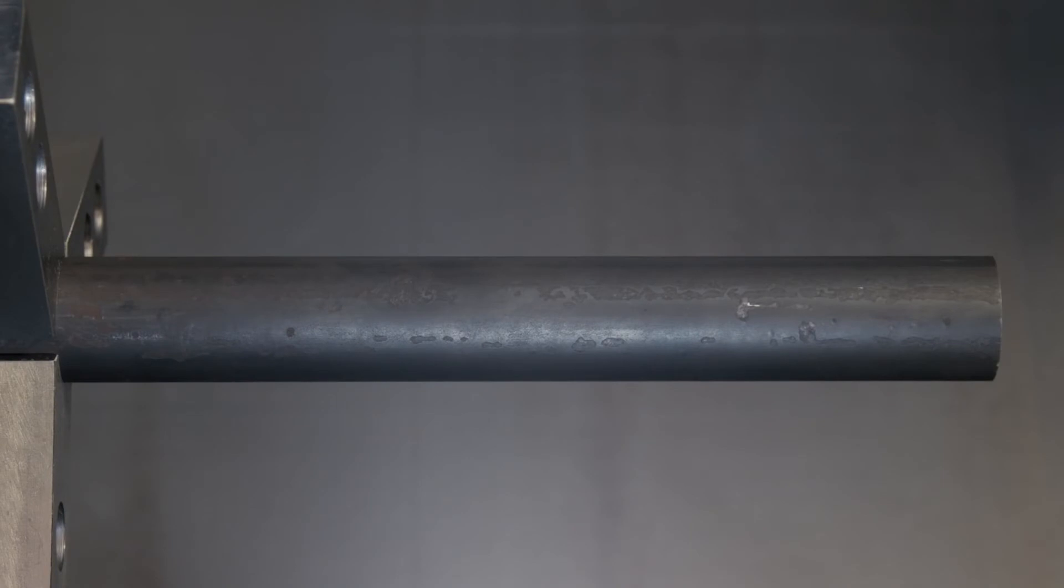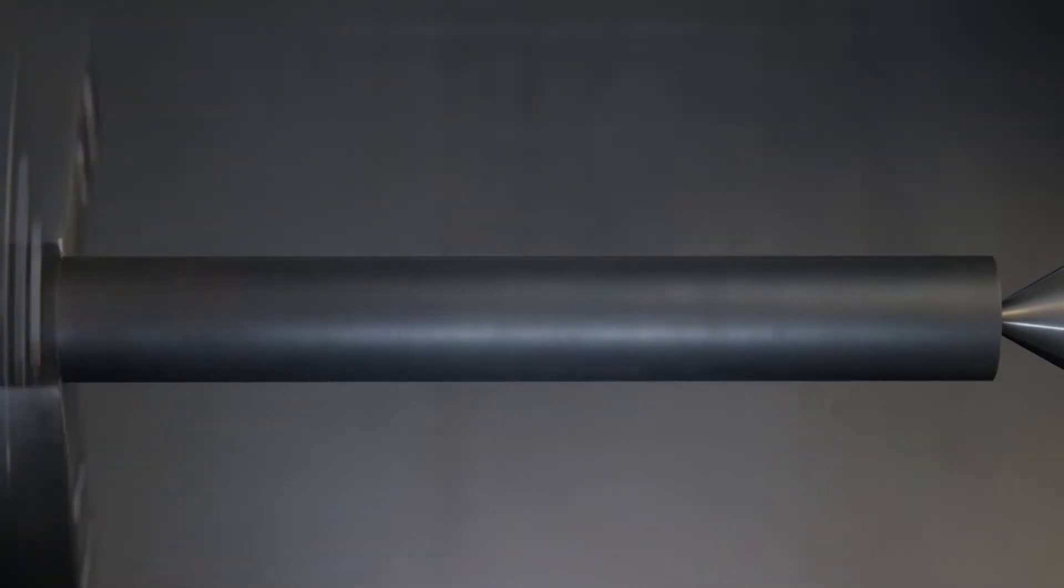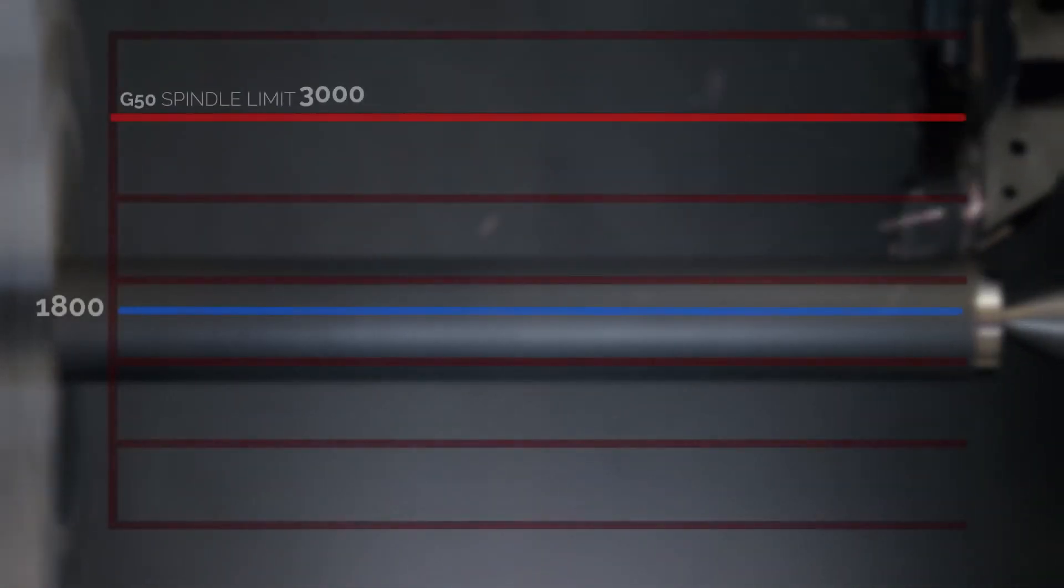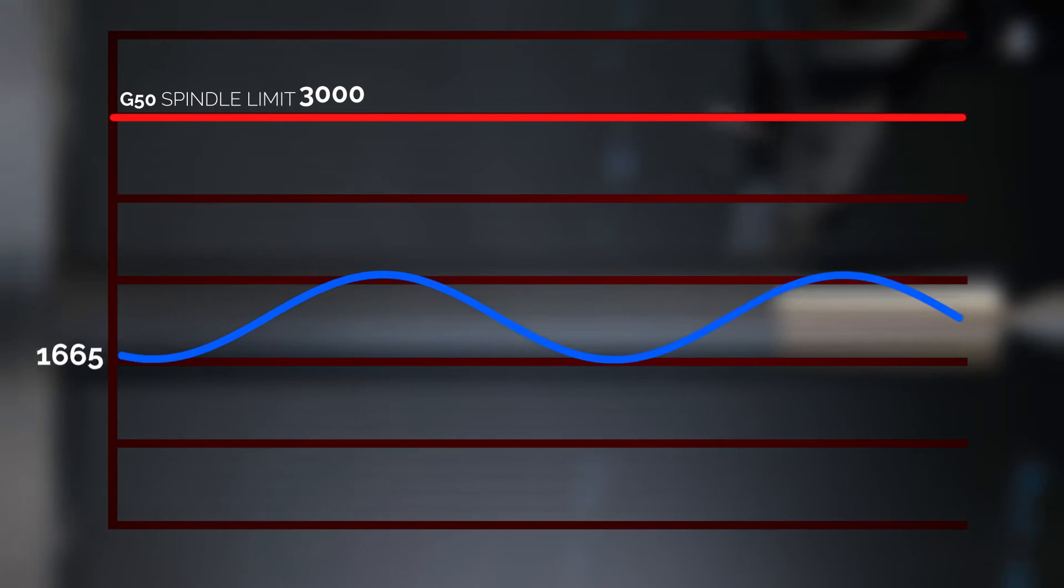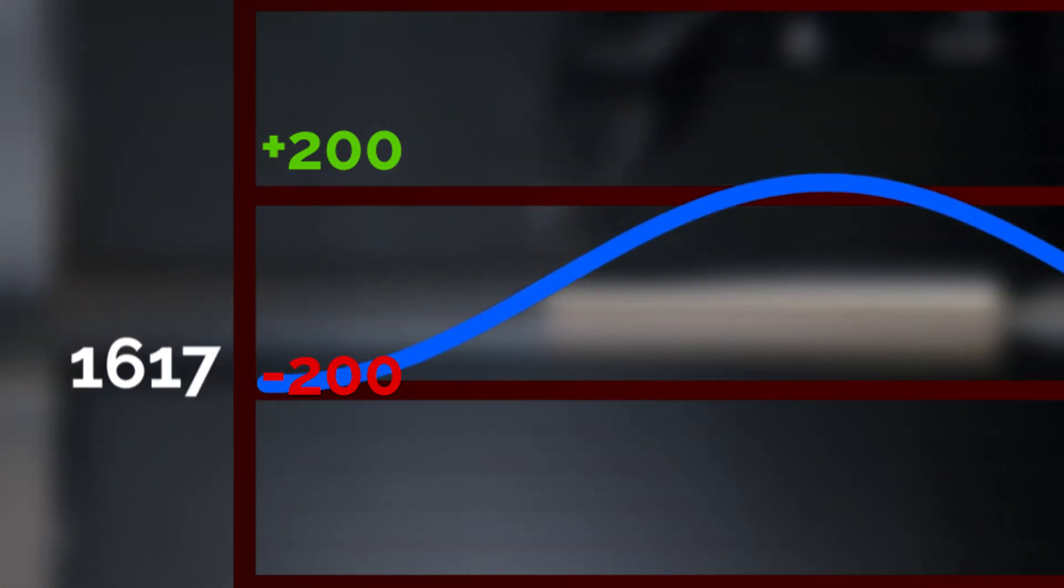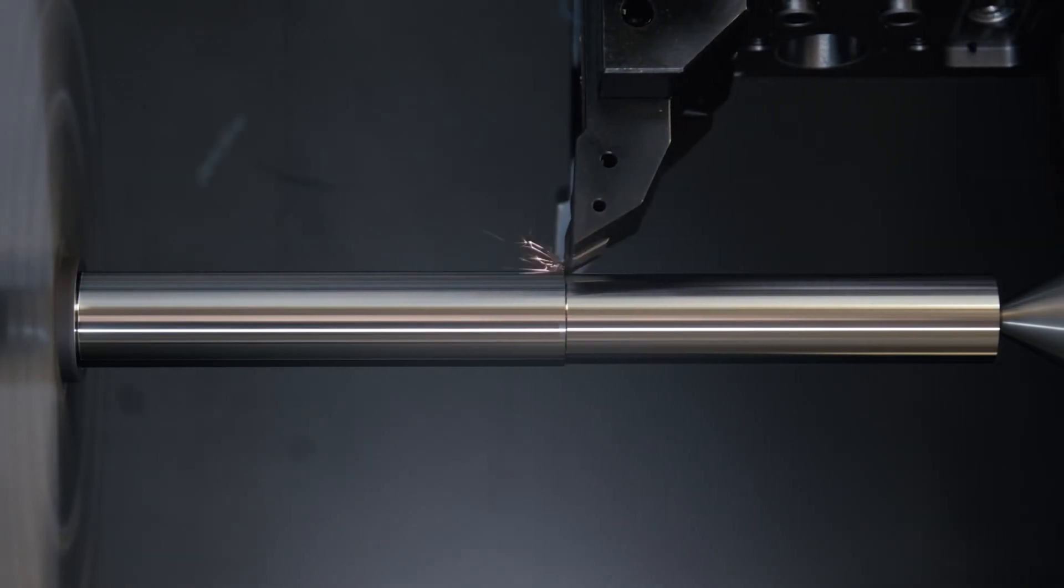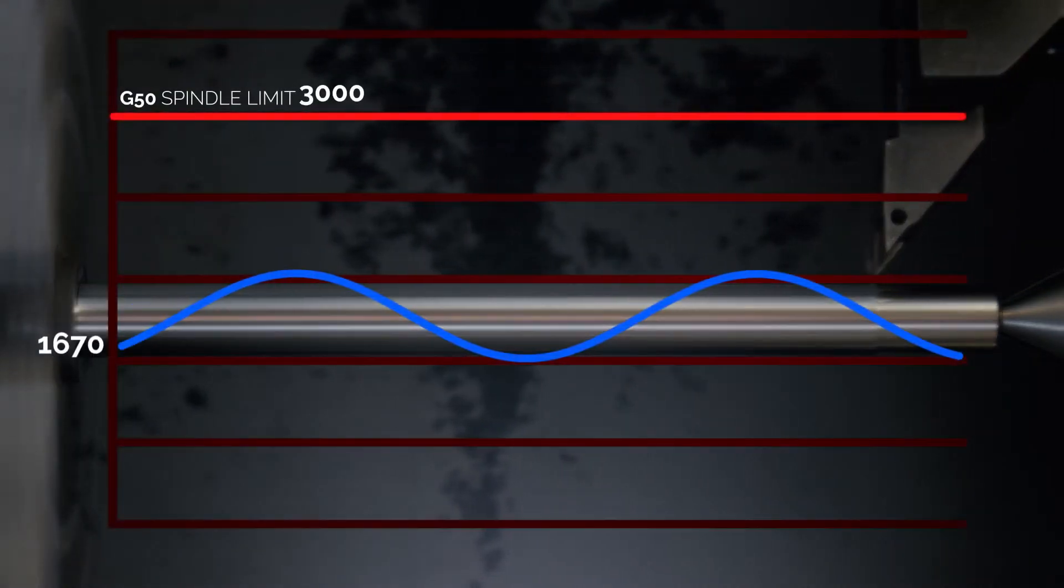For this new example, we'll use this 1 ¾ inch bar. Now we know that G96 adjusts spindle speed to maintain constant surface speed. Our program has G96 set to 775 this time, which is telling the spindle to maintain that 775 surface feet per minute. Our program here has G50 set to 3000 RPM again. SSV is on, and our setting 165 value is 200. With 200 added to the commanded spindle speed, our RPM for the first cut peaks at 2000 RPM. As we continue to cut and that diameter gets smaller, of course the spindle speed increases. The final pass is at just under an inch in diameter.